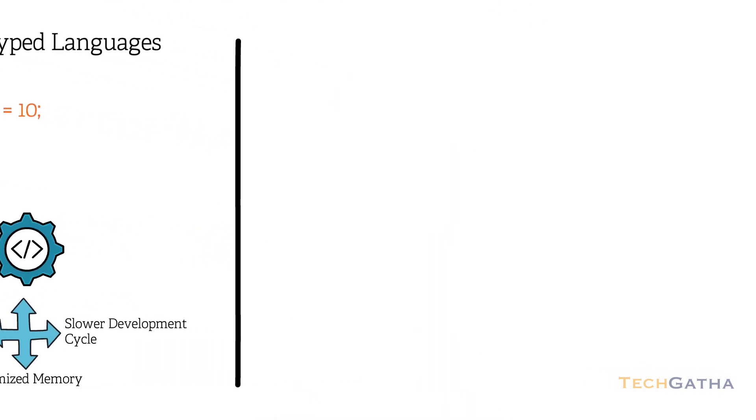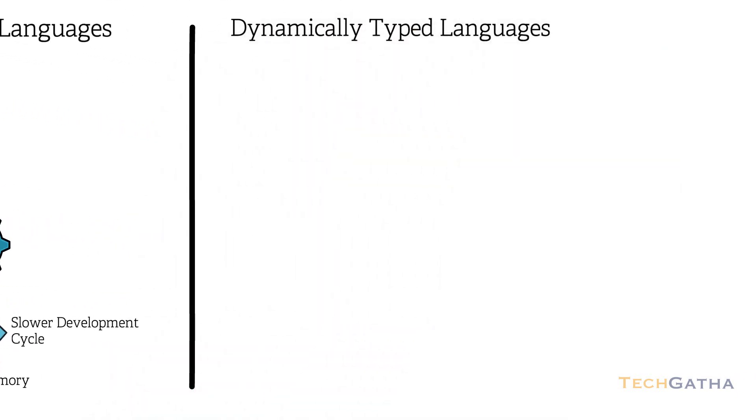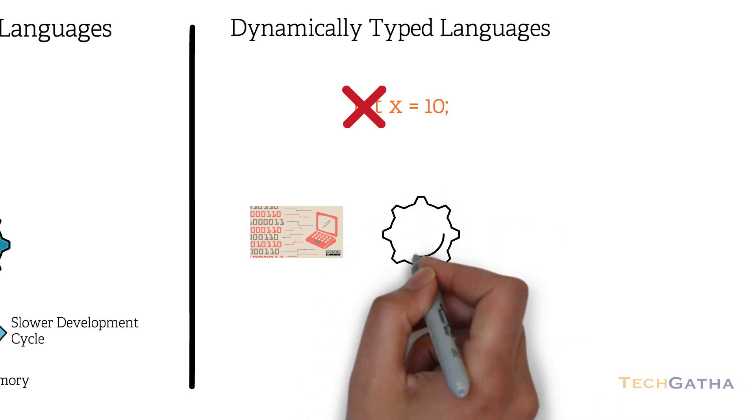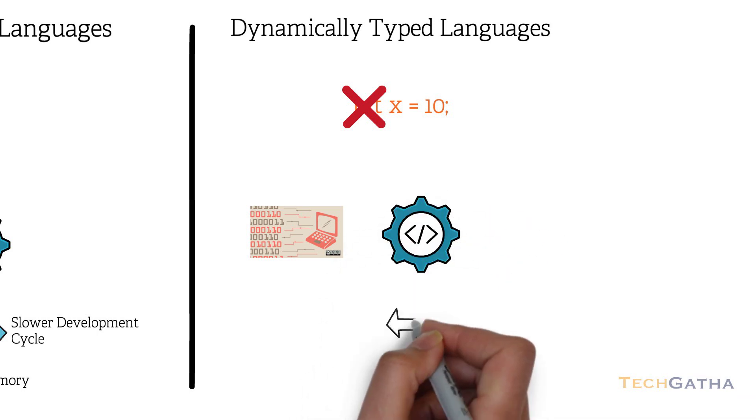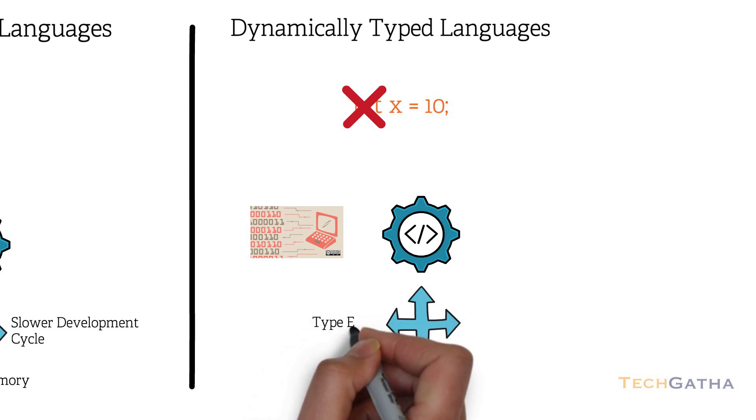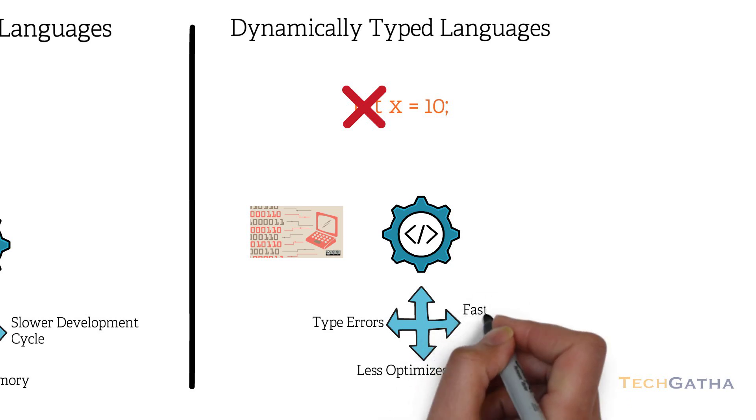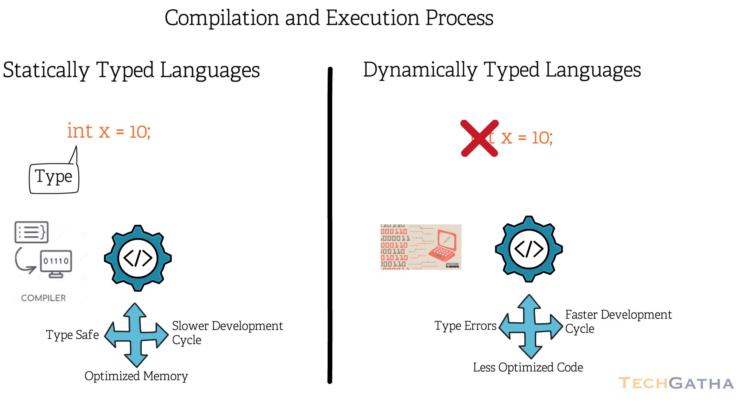As opposed to dynamically typed languages, the variable type is not declared. And hence, these languages usually don't have a compiler, but have an interpreter that checks for type at the time of program execution. Hence, these languages may have type errors, produce machine code that might not be optimized. And since there is no compilation step, the development cycle is faster.